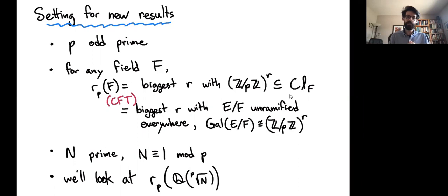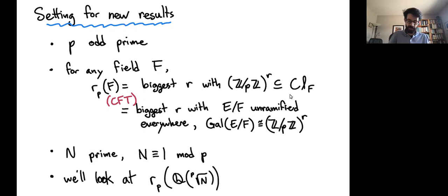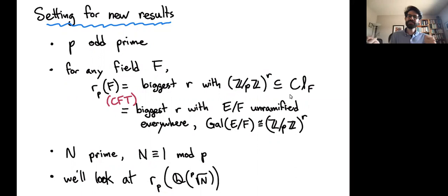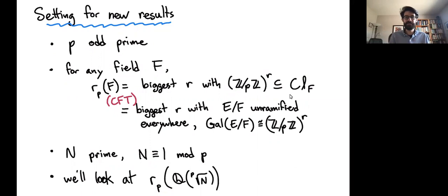The family of fields we study is: let N be a prime congruent to 1 mod p, and we study R_p of Q adjoined a p-th root of N. The reason N is capitalized is that this work is in a lineage stemming from Mazur's Eisenstein ideal paper, where N started life as the level of a modular form. The simplest case — N prime — is already very interesting, and that connection, while now fairly indirect, motivates the notation.